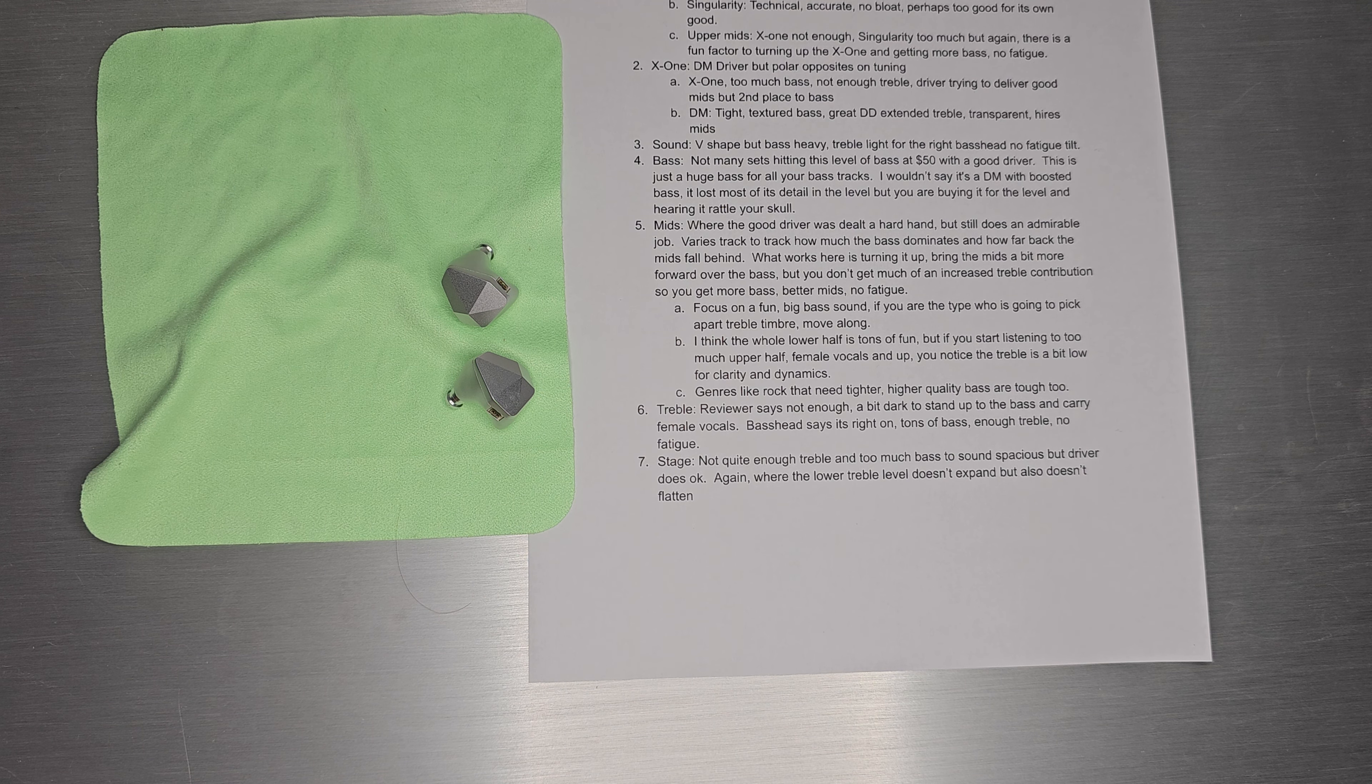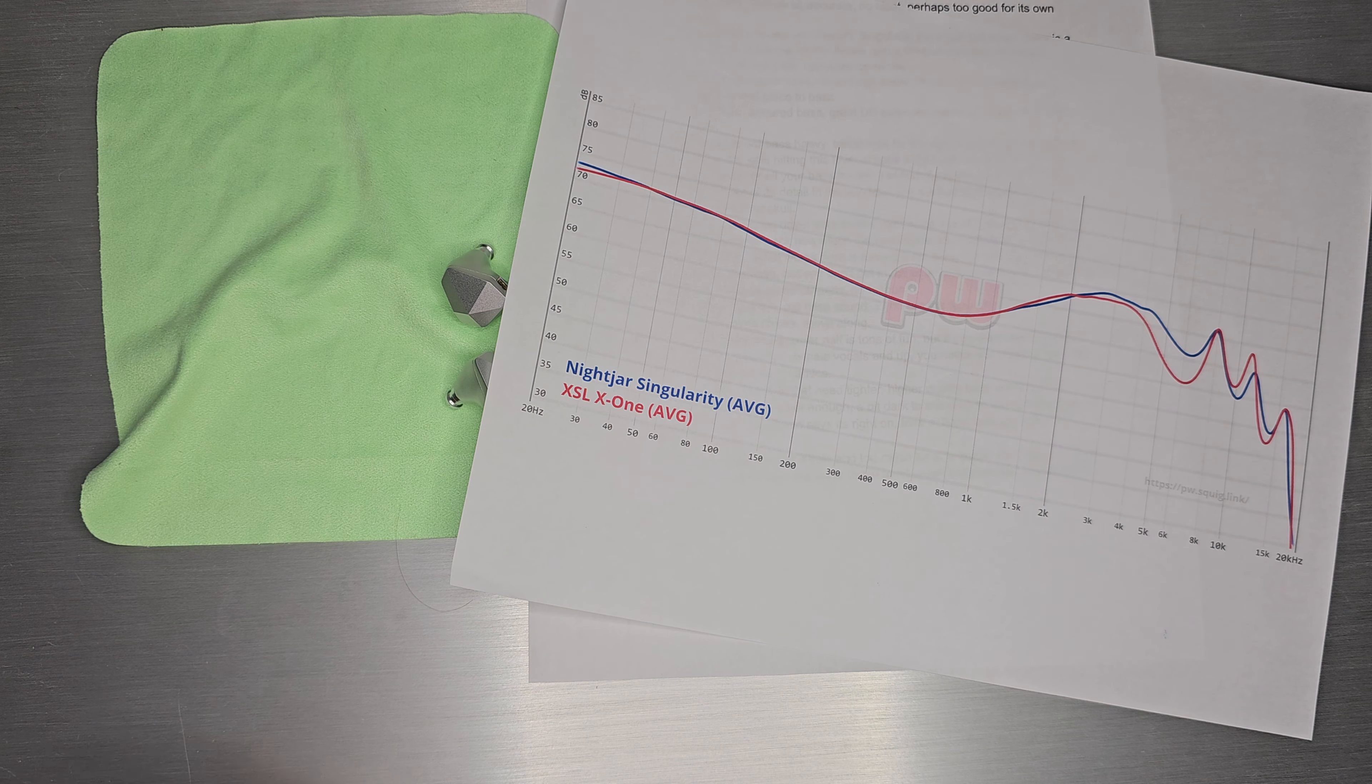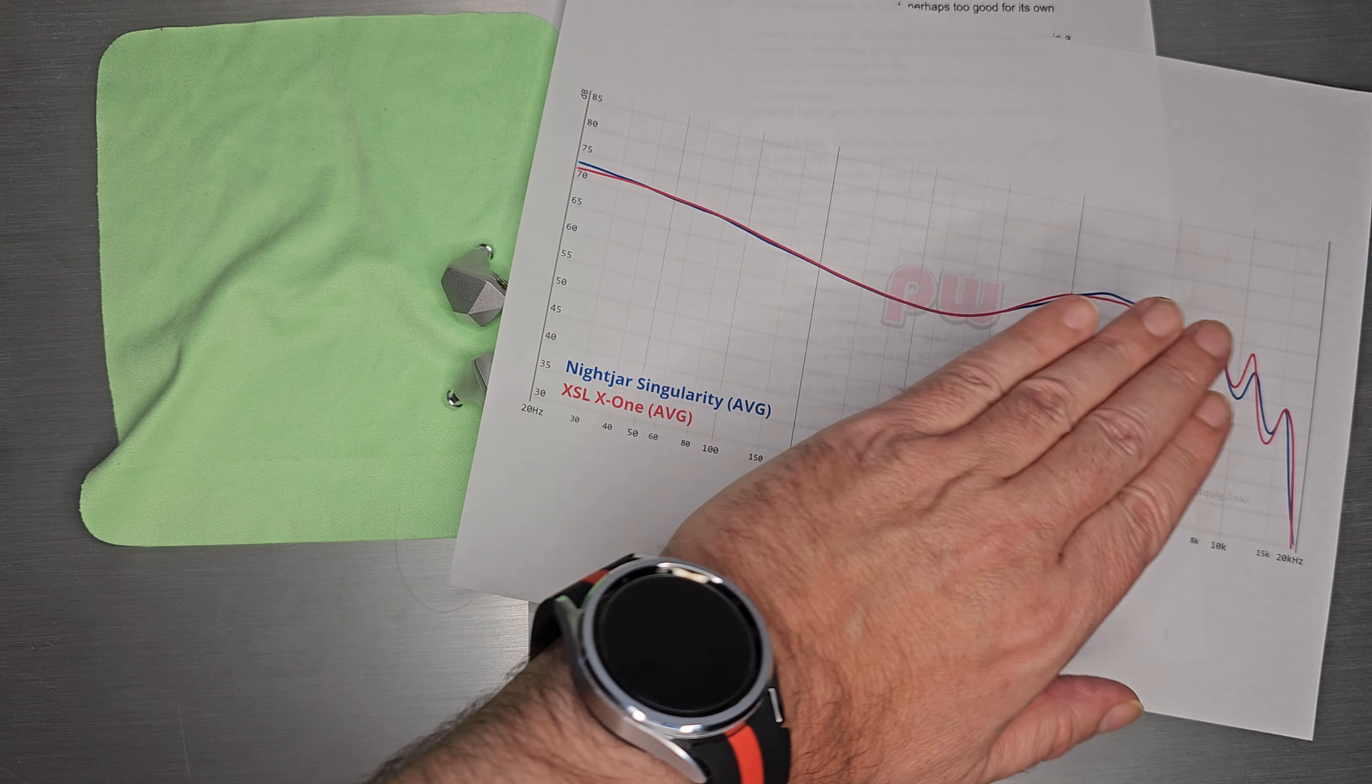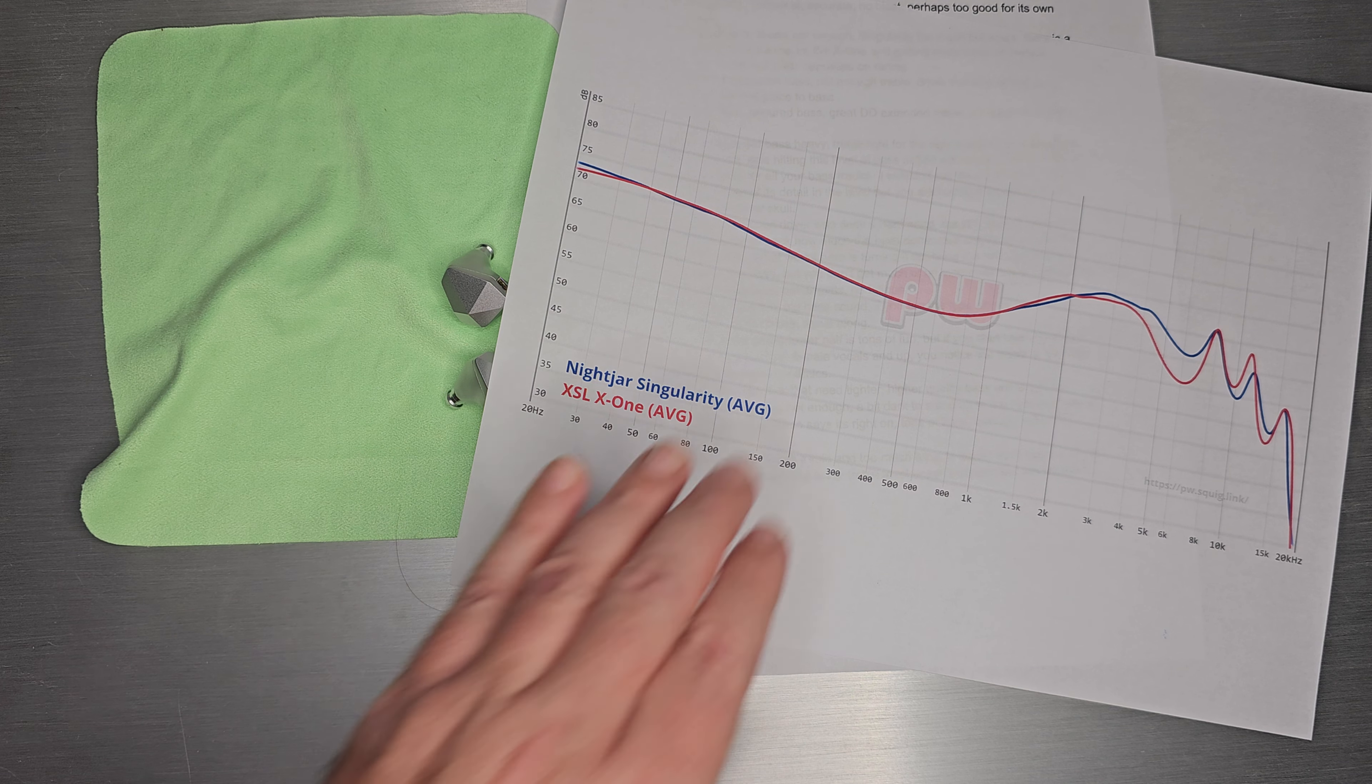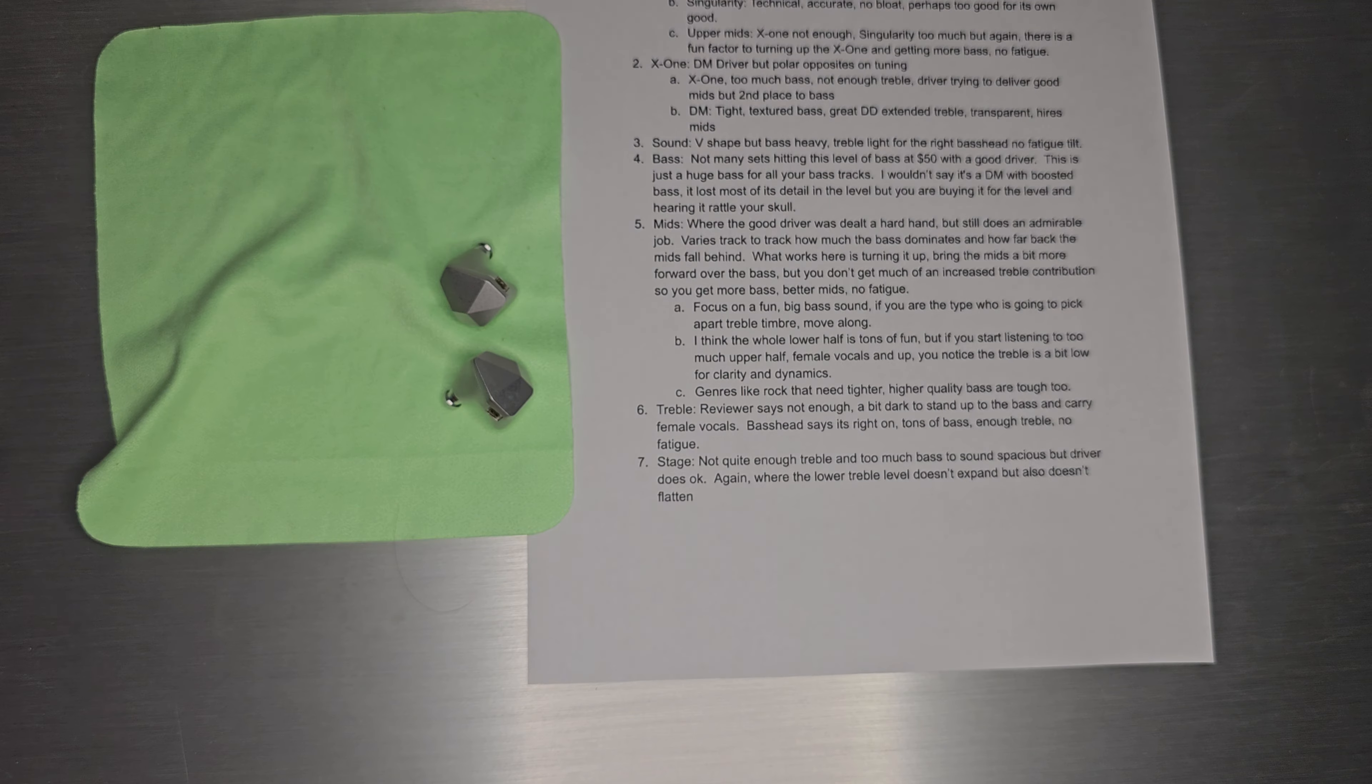I think that's sort of where Singularity kind of got it wrong. I think that little bit right there actually did flatten the stage. And it didn't work out as well, especially at higher volumes. Whereas X1, you can turn it up pretty much as high as your ears will stand or your skull will stand. And it'll pretty much do what it does at pretty much the same volume or higher.